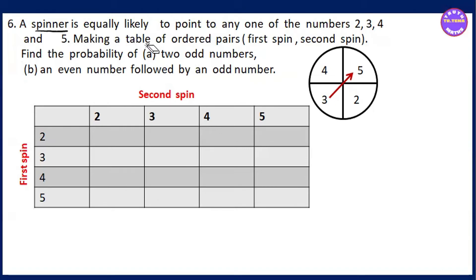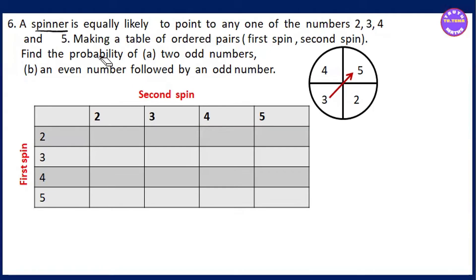Making a table. The table is called an ordered pair — order-based. The third spin, the second spin, and the first spin. The first spin and the second spin will be the second spin.